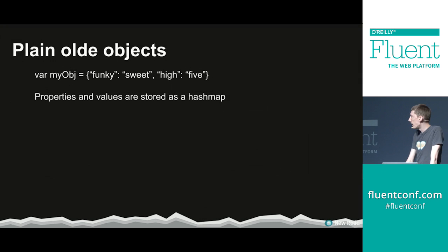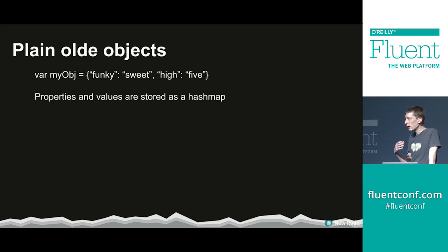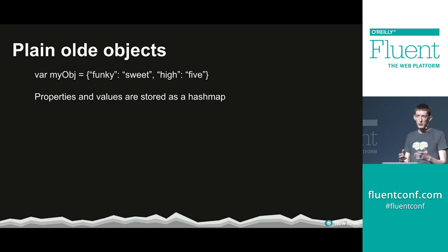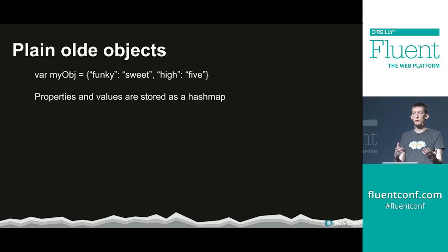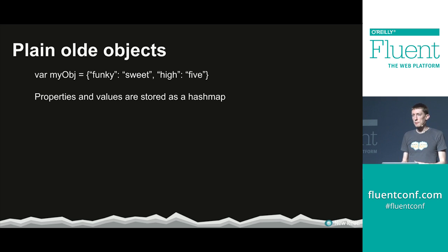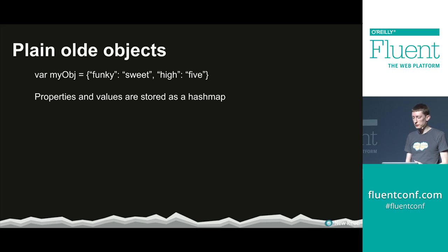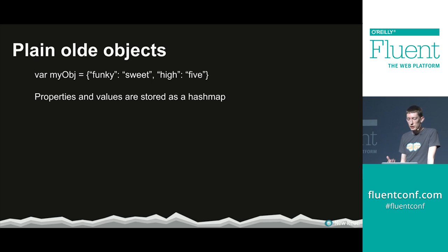An object is effectively a hash map — a hash map that maps a property name to a value. Here we've got strings mapping to strings. In JavaScript, property key pairs — the keys to access the values — must be strings. That keeps it very nice and simple. So properties and values are stored as a hash map; it's a very fundamental concept we see in all kinds of languages.